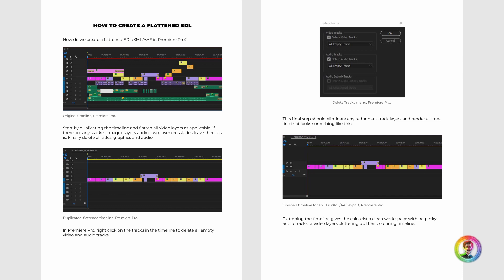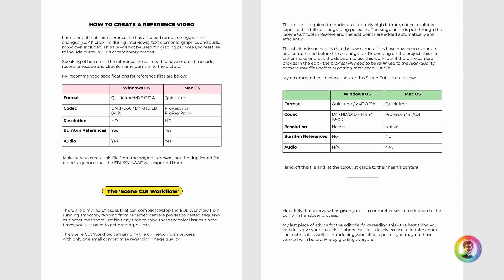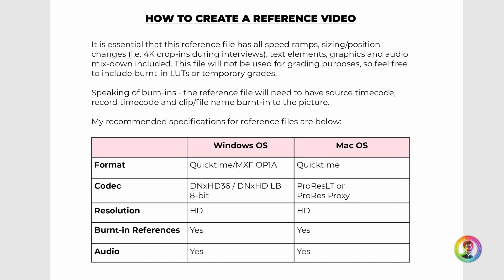When doing an EDL, XML, AAF workflow, it's really important to create a reference video — a reference file of the locked edit. It should include all reframes, text elements, graphics, and an audio mixdown. It should be the entire thing. You can keep temporary LUTs or grades included in this reference file, as that can sometimes be quite useful for the colorist to see what has been done in the edit. This file will be used to check back the conform sequence within Resolve — the colorist needs confidence that the conformed sequence matches the edit frame for frame.